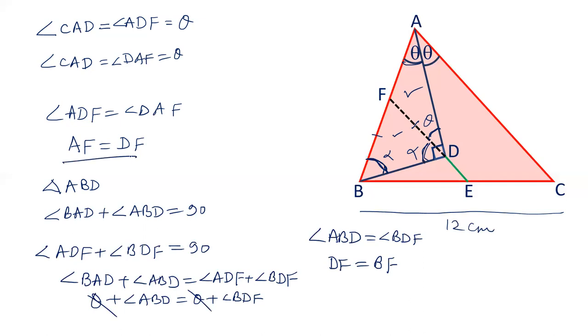From this, AF equals DF, and DF equals BF. That means AF equals BF. This side is equal to this side which is equal to DF. That is, F is the midpoint of AB.